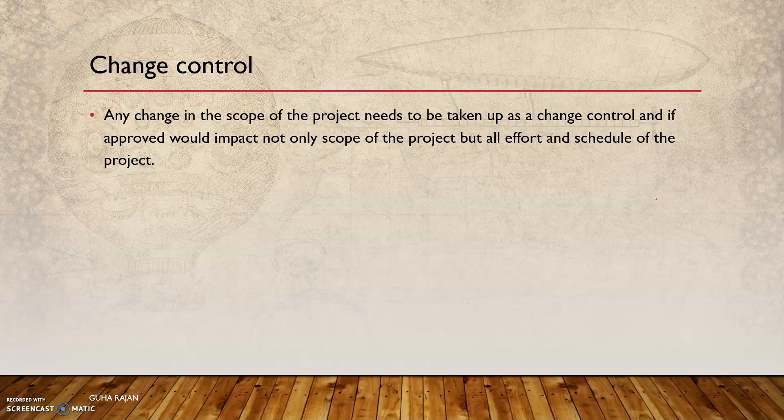What is not agreed upon — even if there is no cost impact — still needs to go through the process. A user may say, 'I need this functionality, there is no effort, just change it,' but all of this needs to go through the change control process, because somewhere it might be documented differently and some cost could be affected.